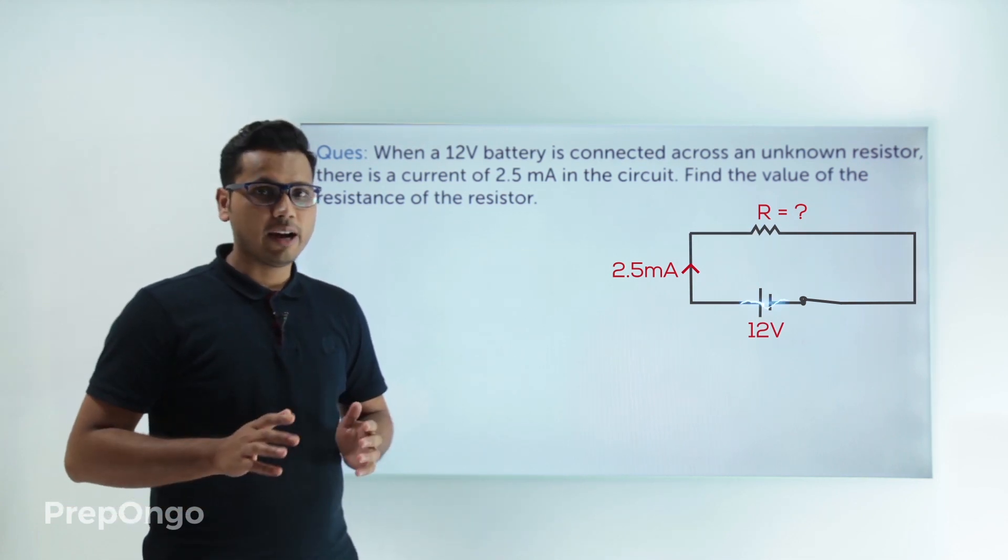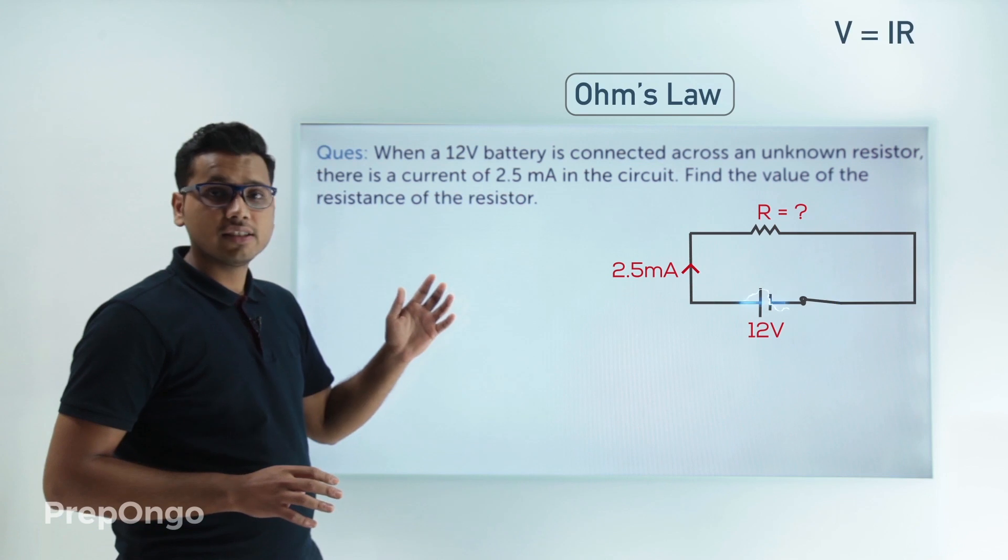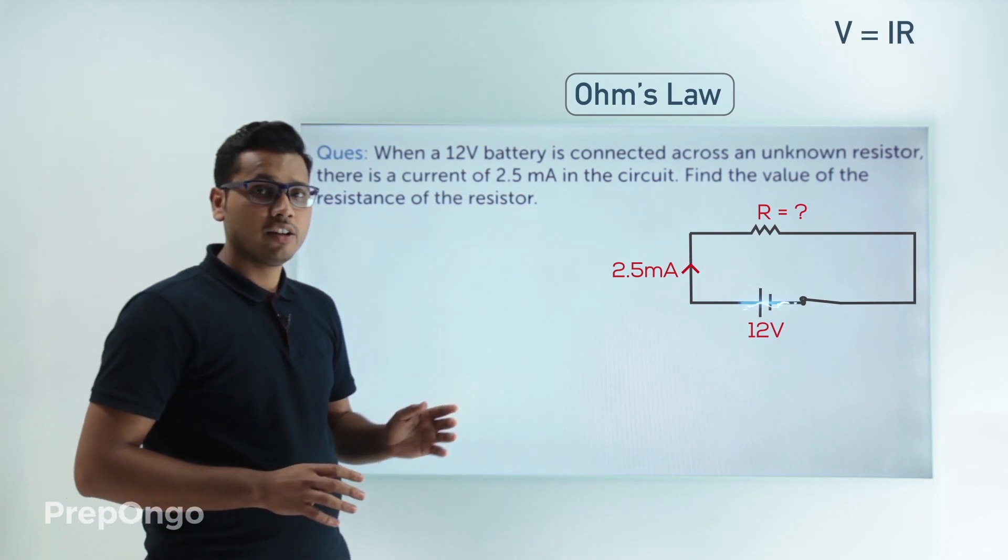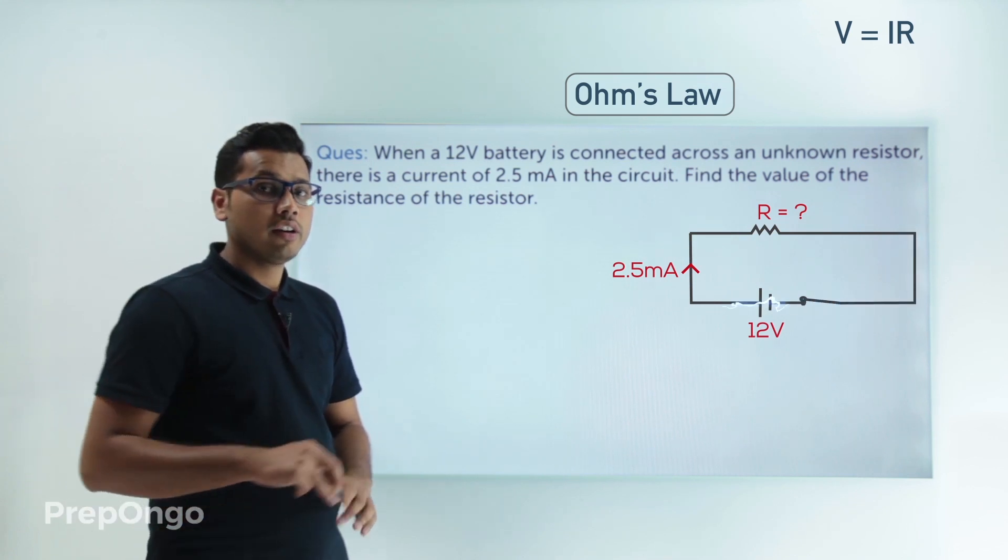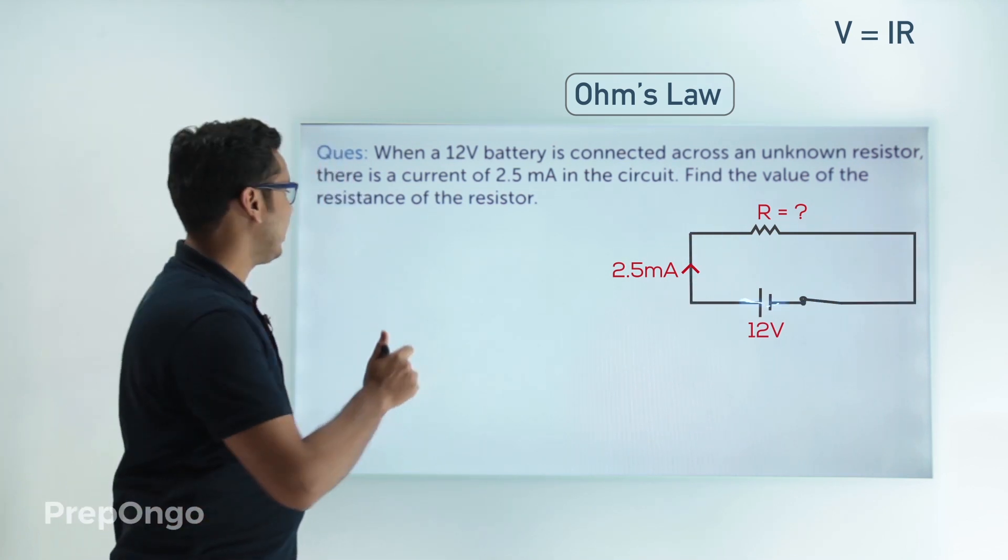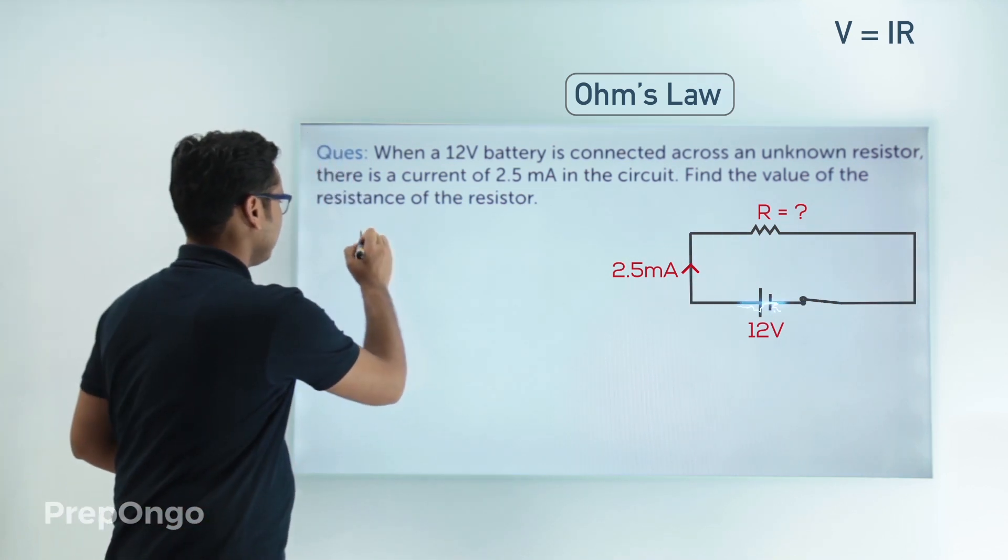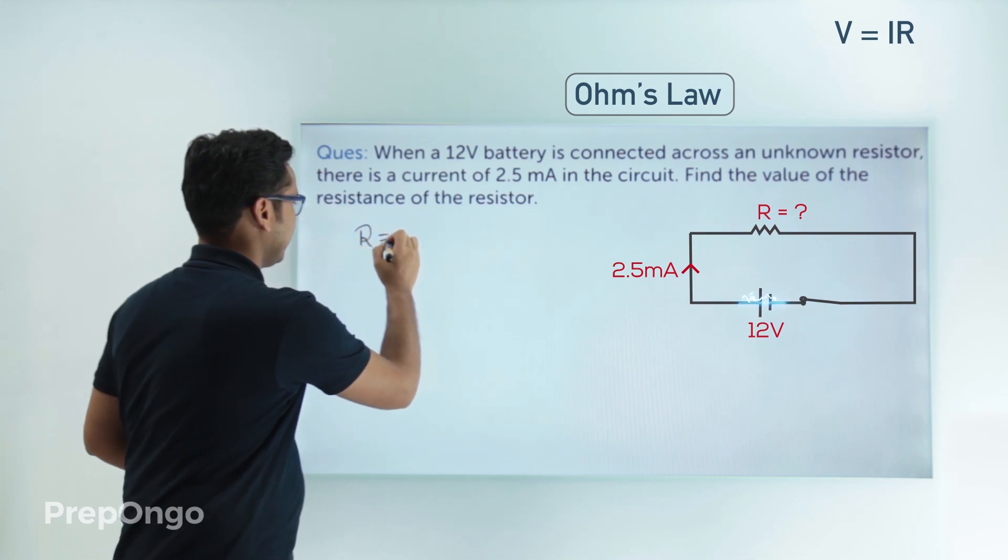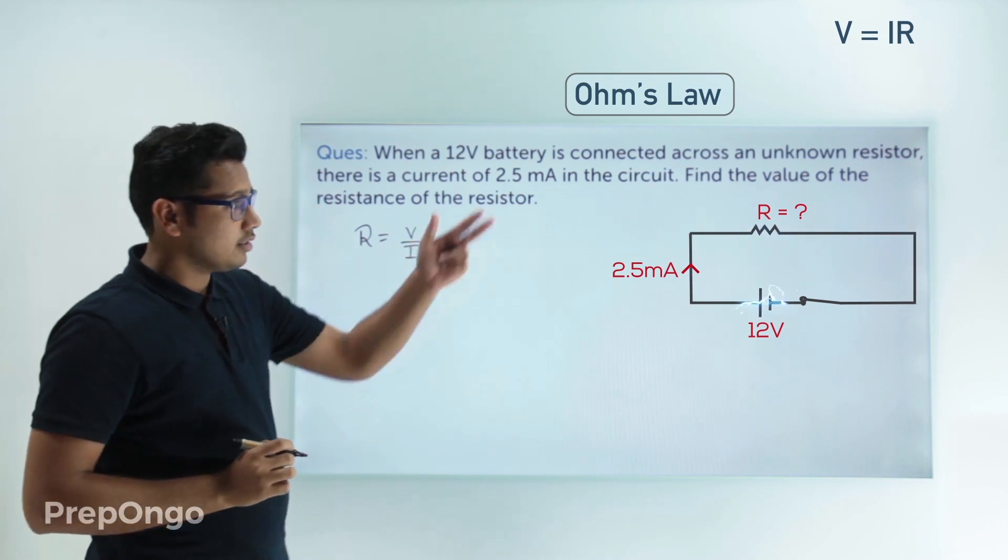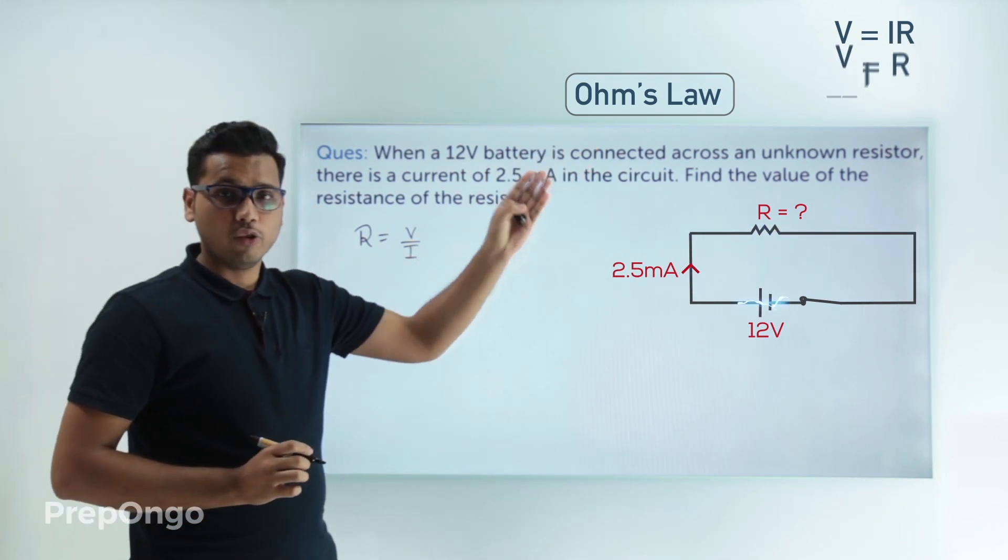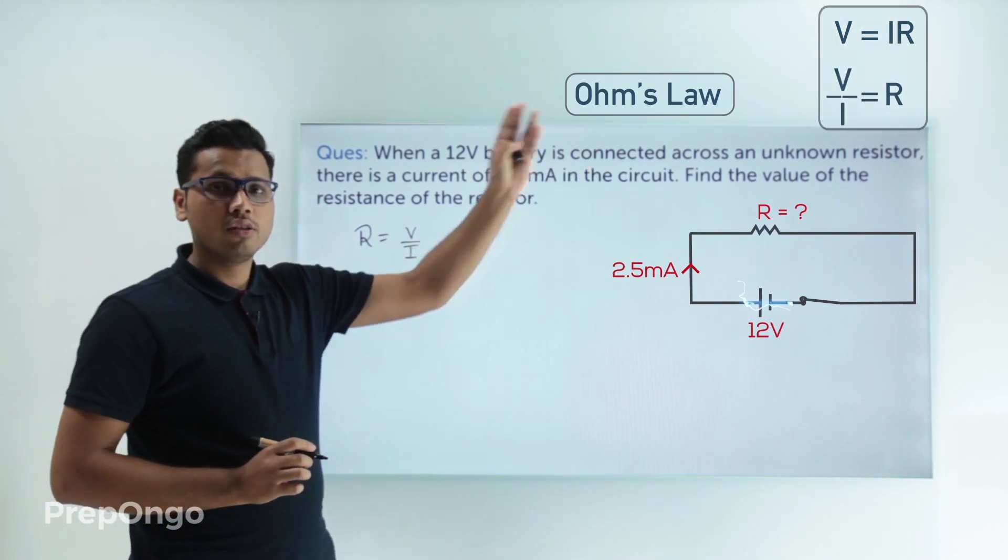We can easily apply Ohm's law, that is V equals IR, to find the value of R. Let's see how. We can write down V equals IR in the form of R equals V upon I. We have taken that I down and R equals V upon I.